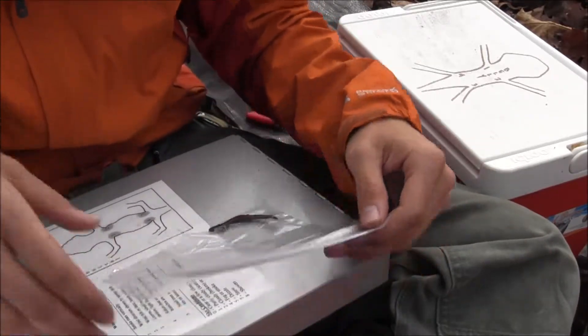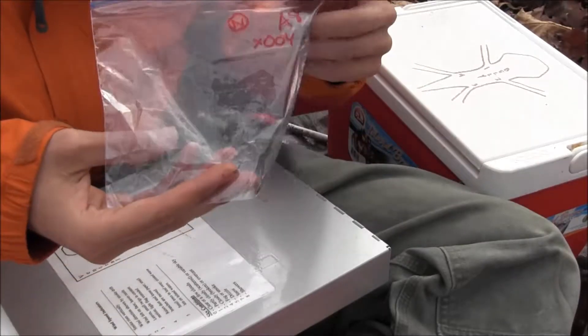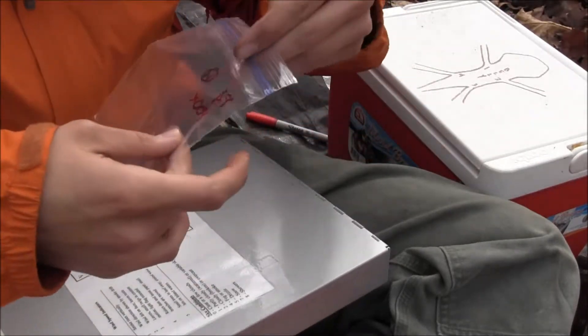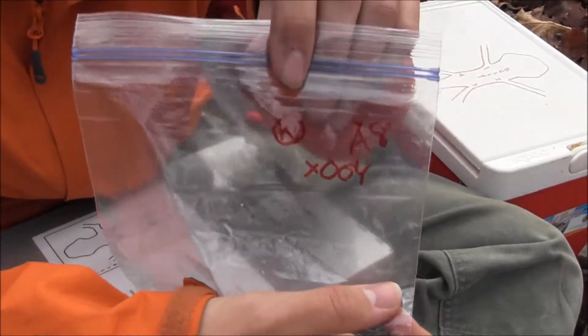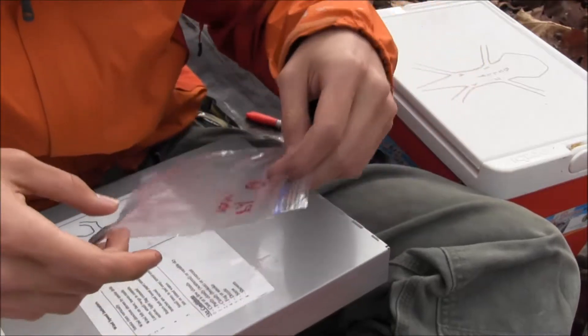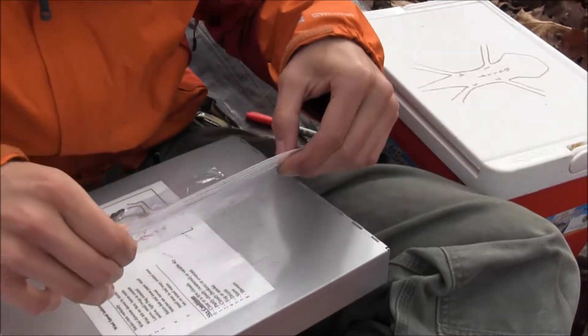Nonetheless, when we're out here in the field, we keep them in a cooler to keep their metabolism low and reduce their stress. And already, I've assigned this individual the code X-O-O-Y. This is coming from our master code sheet for this plot.